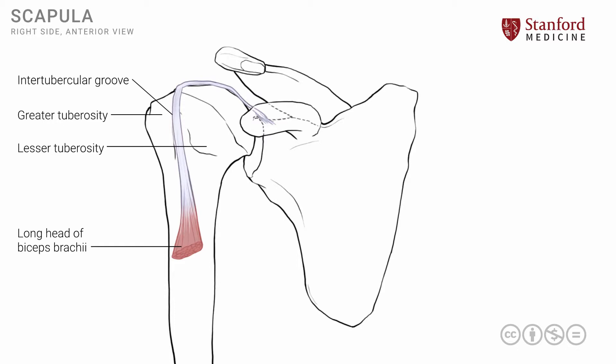Just lateral to the long head of the biceps is the attachment of the pectoralis major muscle. This is a muscle that lies on the front of the chest wall, has attachment to the ribs as well as the adjacent clavicle and sternum, and it attaches laterally in this region of the proximal humerus.